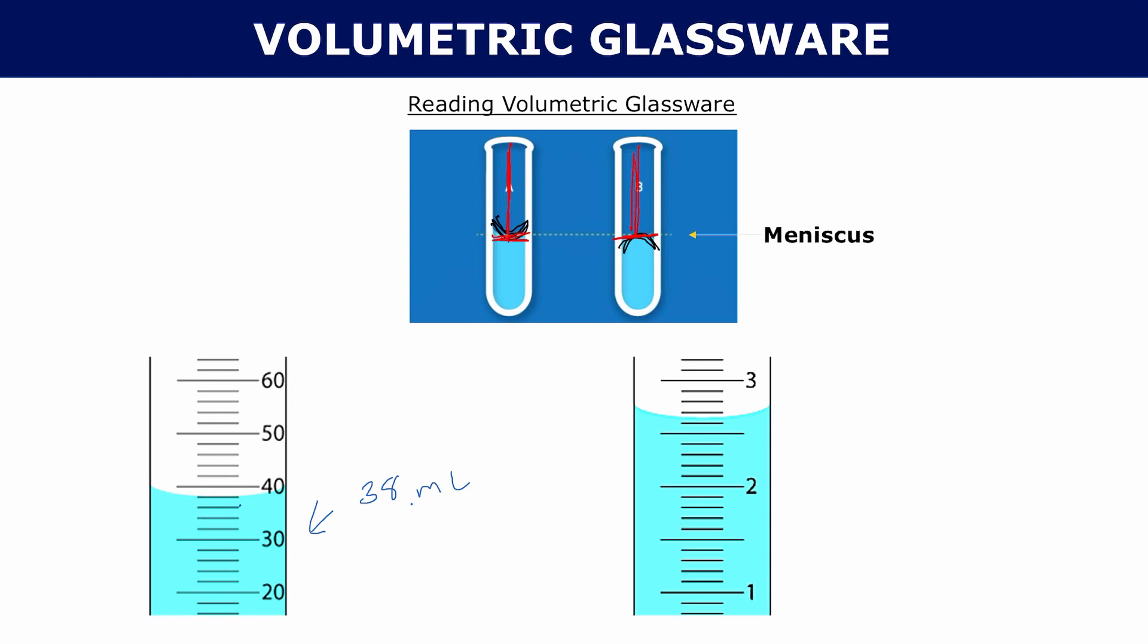Let's do the one on the right. We are certain up to 2.6, so that's the 2.6 mark. But we can estimate one more digit. I say that looks like about 2.65. I'm allowed to add that 5 in there because, again, we're allowed to approximate one more digit than we really know.